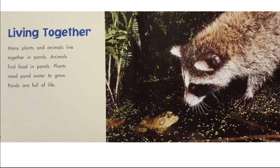Living together — many plants and animals live together in ponds. Animals find food in ponds. Plants need pond water to grow. Ponds are full of life. What two animals do you see in the illustration here? A raccoon and a frog.